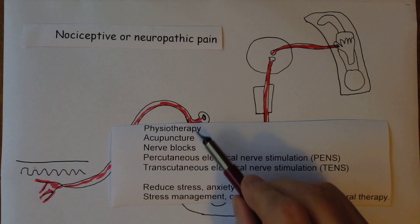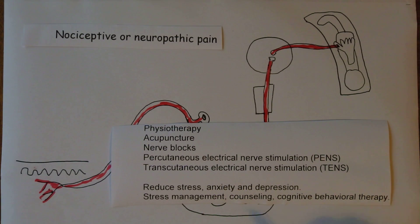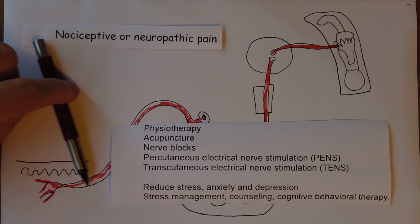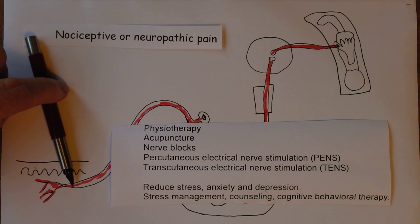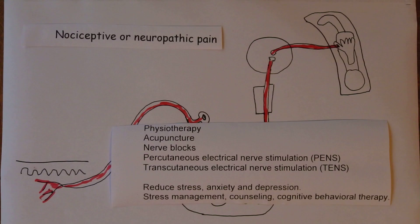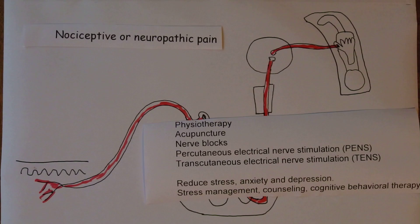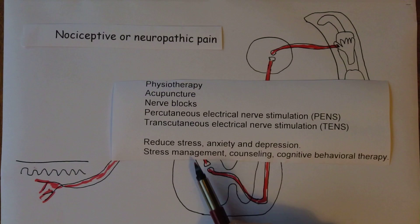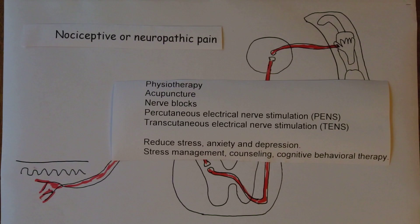Also consider physiotherapy, and if acupuncture works, that's fine. Nerve blocks can be useful sometimes using lignocaine. Percutaneous electrical nerve stimulation involves placing an electrode through the skin into the area of nerves and passing an electrical current through. Transcutaneous electrical nerve stimulation — TENS — places electrodes on the surface of the body. Remember this is about the whole person: stress, anxiety, and depression all make pain worse, so manage these things and look after the whole person.